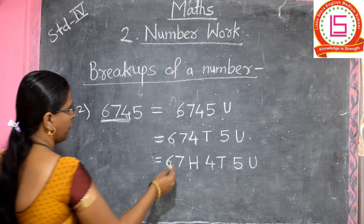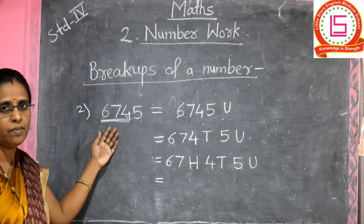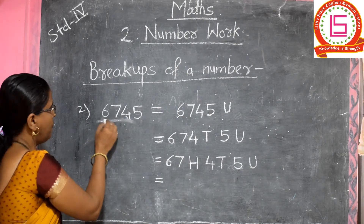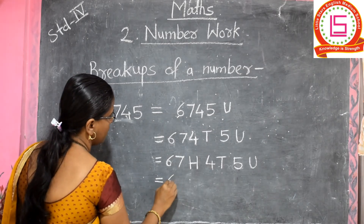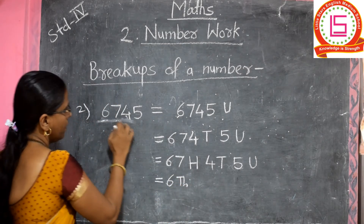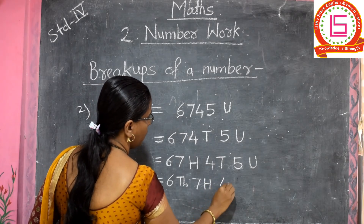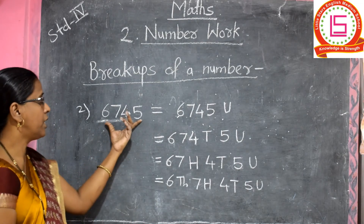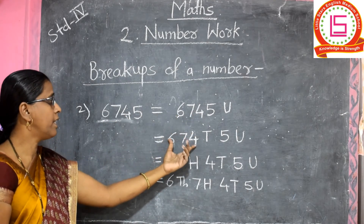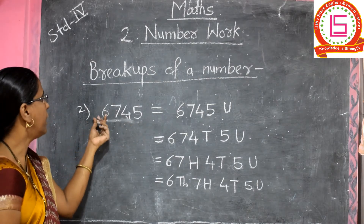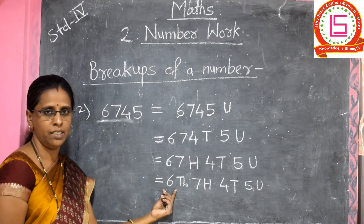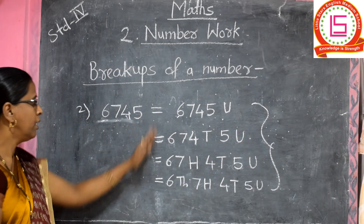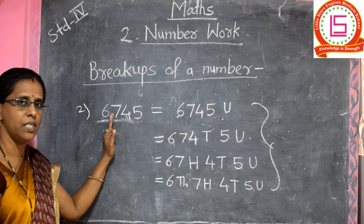This number is a 4-digit number, so we give 4 breakups. First read all 4 digits, then 3 digits, then 2 digits, and at last 1 digit. These are the 4 breakups of this number.